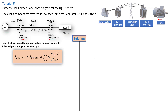The first per unit to calculate is for transformer one. We don't have to calculate the per unit of the generator because the voltage of the generator is 23 kilovolt and the base apparent power is 600 kilovolt ampere — there are no other values given. So if we replace everything we get 1∠0° per unit, and we move to the next element, which is transformer one.